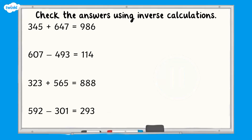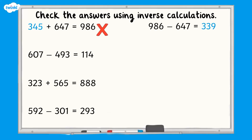How did you get on? Let's look at the inverse calculations. 986 subtract 647 equals 339, which does not match 345, so the addition calculation is wrong.